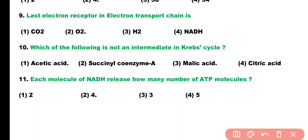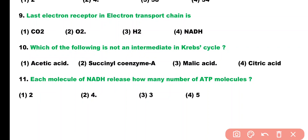Question number 10. Which of the following is not an intermediate in the Krebs cycle? Acetic acid, succinyl coenzyme A, malic acid, or citric acid. Correct answer is option 1. Acetic acid is not an intermediate in the Krebs cycle.